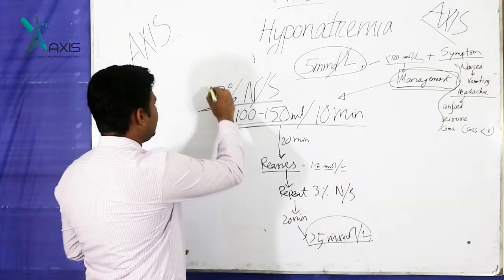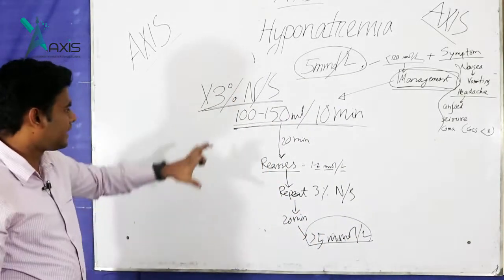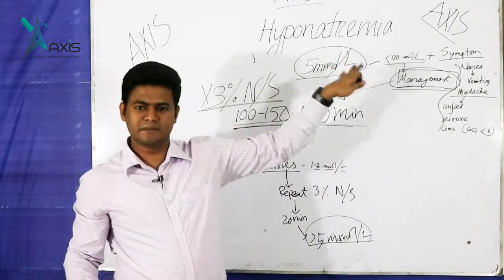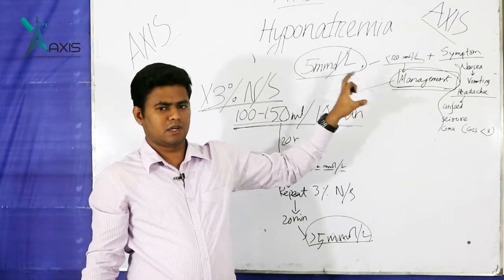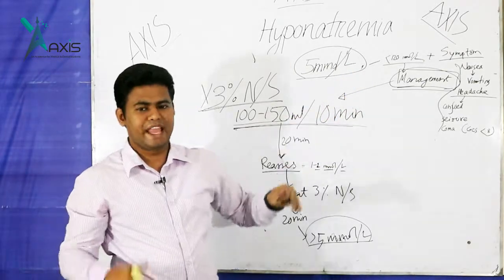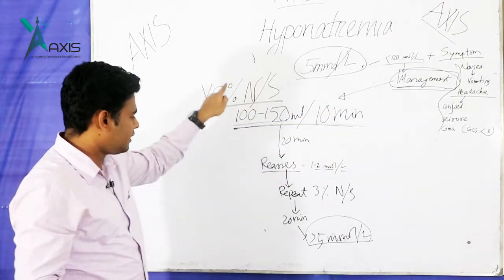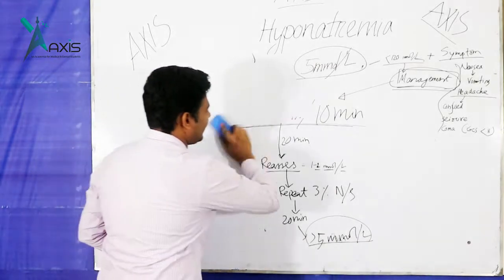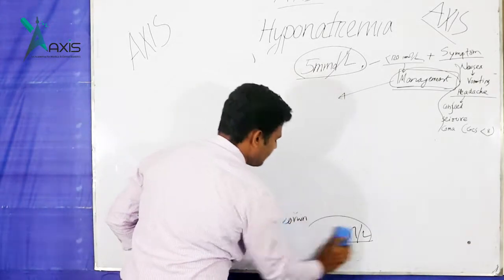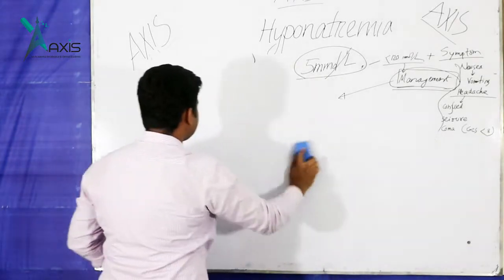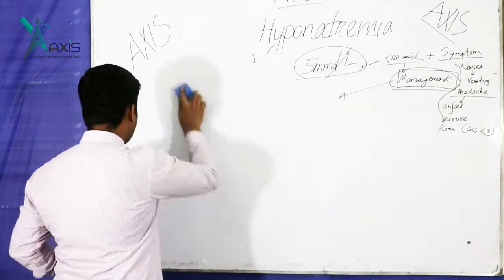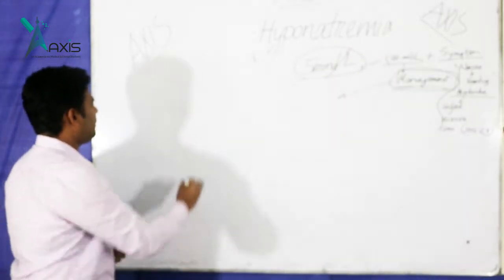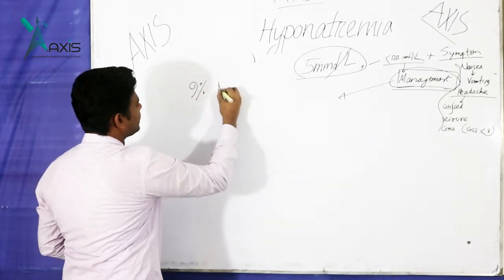Once the target of 5 mmol per litre rise is achieved, stop the 3% normal saline. Do not continue hypotonic saline. If the patient does not have severe symptoms anymore, manage in the normal ward. Otherwise, transfer the patient to HDU or ICU and switch to 0.9% normal saline.